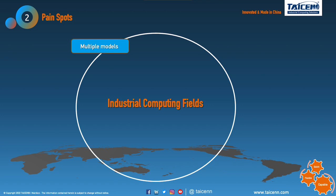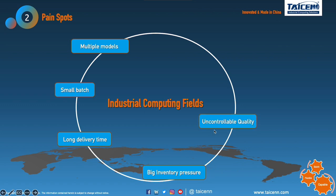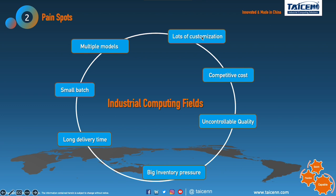In industrial computing fields, what are the pain points? Manufacturers, distributors, our partners, system integrators, end users — we can see multiple models, small batches, long delivery time, bigger inventory, uncontrollable quality, competitive cost, and lots of customization. Some pain points apply to manufacturers, some to partners, and some to system integrators. In this computing field, we summarize these pain points and aim to solve them with our modular concept.